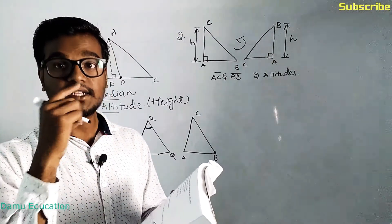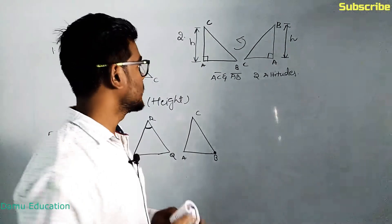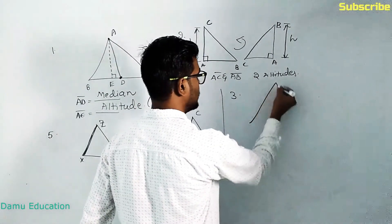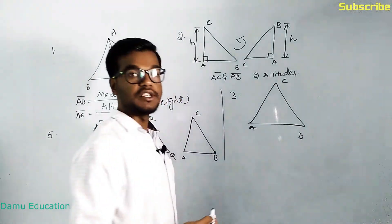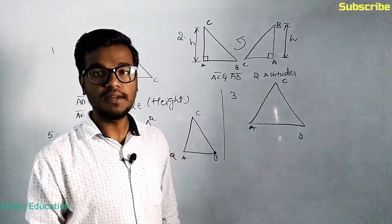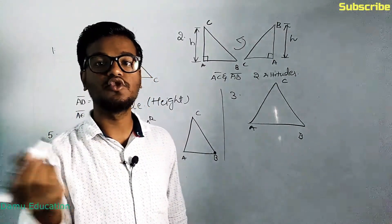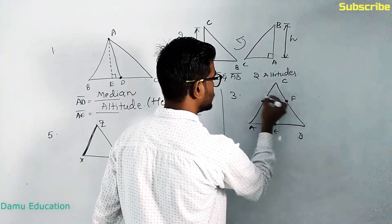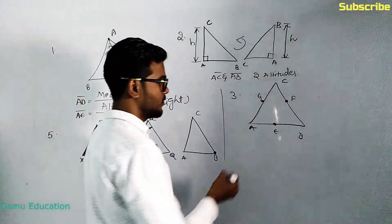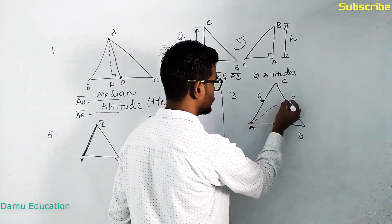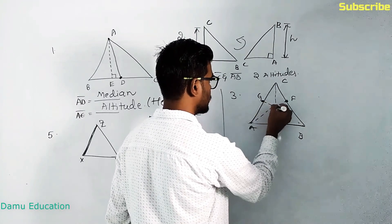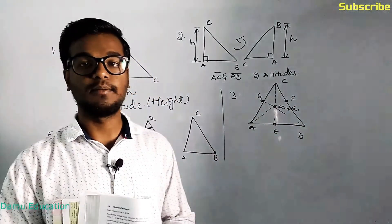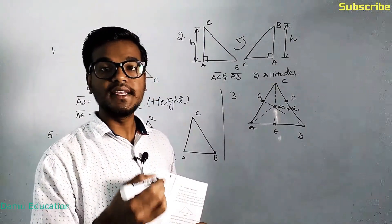Our third question is: does the median always lie in the interior of the triangle? Yes, it always lies inside. For any triangle ABC there are always three medians, because from each vertex the line joins the midpoint of the opposite side. The point where all three medians meet is called the centroid, and all these medians lie inside the triangle.